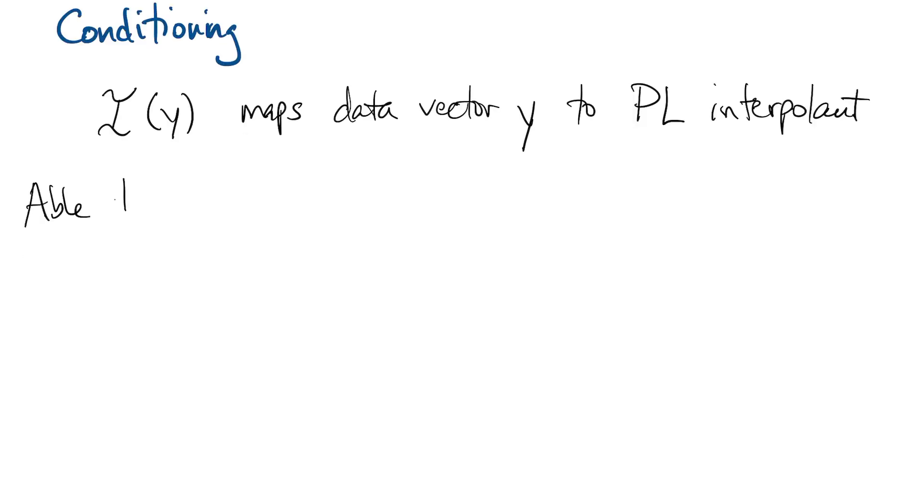Remember that in general interpolation, the condition number can depend on the nodes as well as the type of the function, or the basis. As we wrote before, let's use the squiggly i to denote the operator that maps a data vector to its piecewise linear interpolant. There was a theorem in the last section that gave upper and lower bounds on the condition number of i, but we can actually show that it's exactly equal to 1.